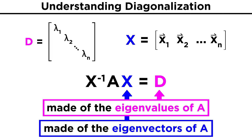It's important to note that while we can place the eigenvalues and eigenvectors in any order we want once we find them, we must remain consistent in how we order them in these matrices. The first column of the X matrix must be the eigenvector associated with the eigenvalue in the first term for the diagonal of D. Same with the second column of X and the second term for the diagonal of D, and so on.